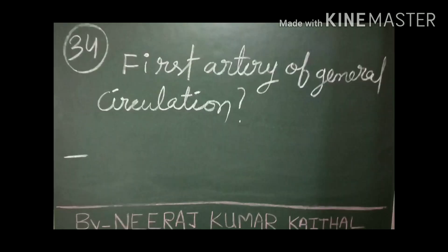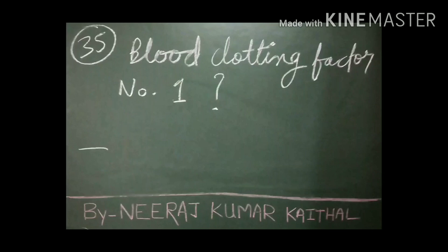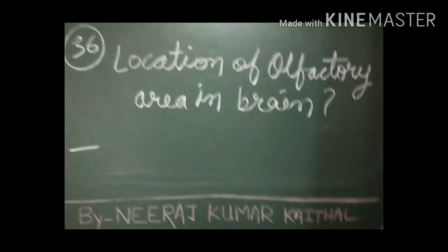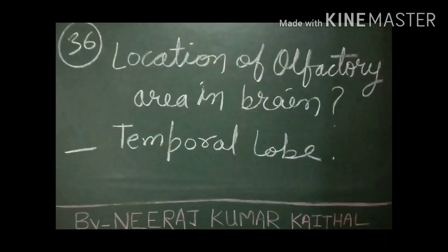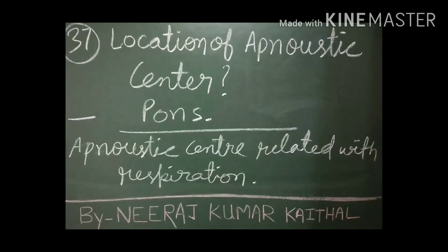The first artery of general circulation is the aorta. Another name of blood clotting factor number one is fibrinogen — it is the first blood clotting factor. The location of the olfactory area in the brain is in the temporal lobe. The apneustic center is located in the pons part of the brain and is related to respiration.